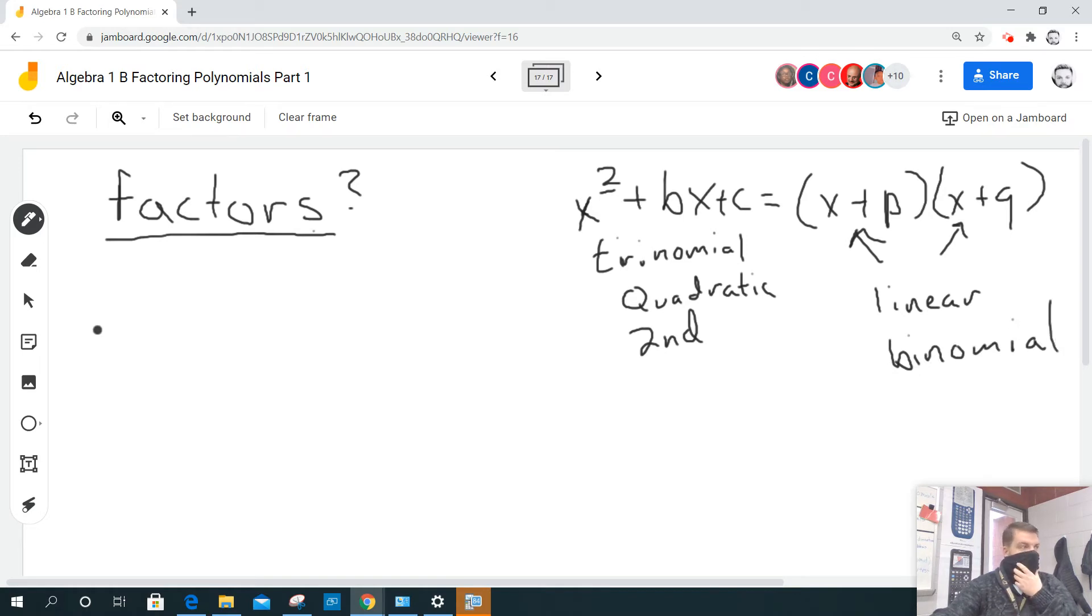And so why did I go through that? Because they want us to factor this m squared plus 12m plus 35. So one way to do this is we're going to do the guess and check, but I've got to find two terms that when I multiply them, they equal 35, and when I add them up, they equal 12.